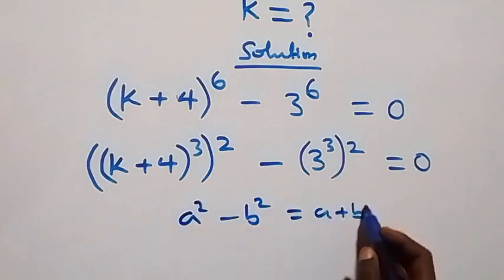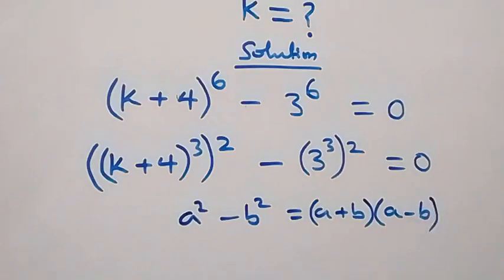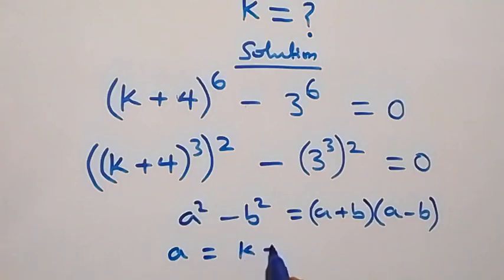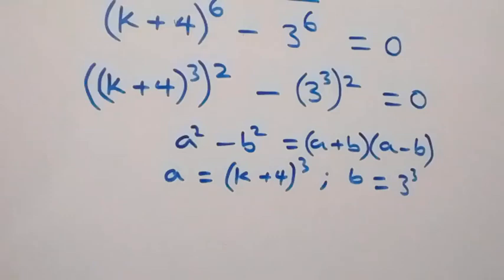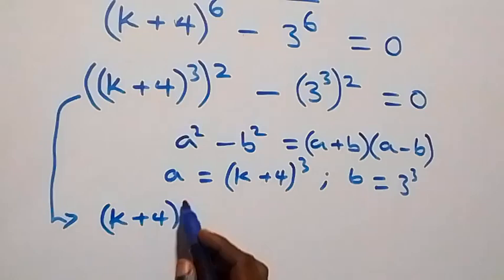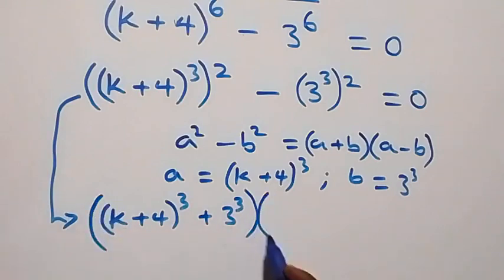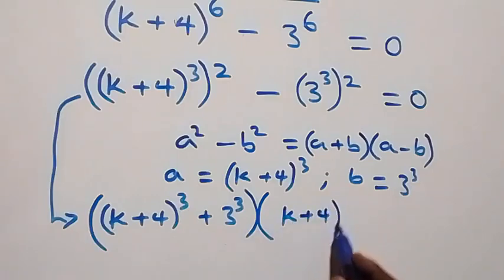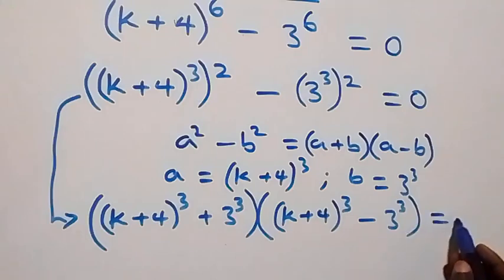From here, using the identity a squared minus b squared equals a plus b into a minus b, we can treat k plus 4 raised to power 3 as a and 3 raised to power 3 as b. So the equation becomes: k plus 4 raised to power 3 plus 3 raised to power 3, times k plus 4 raised to power 3 minus 3 raised to power 3, equals to 0.